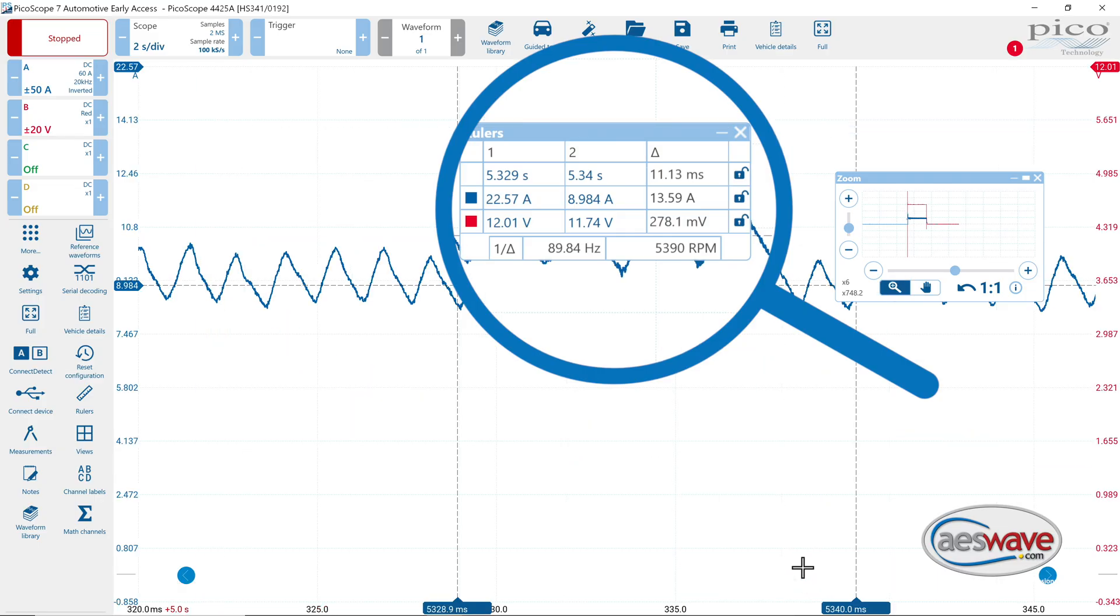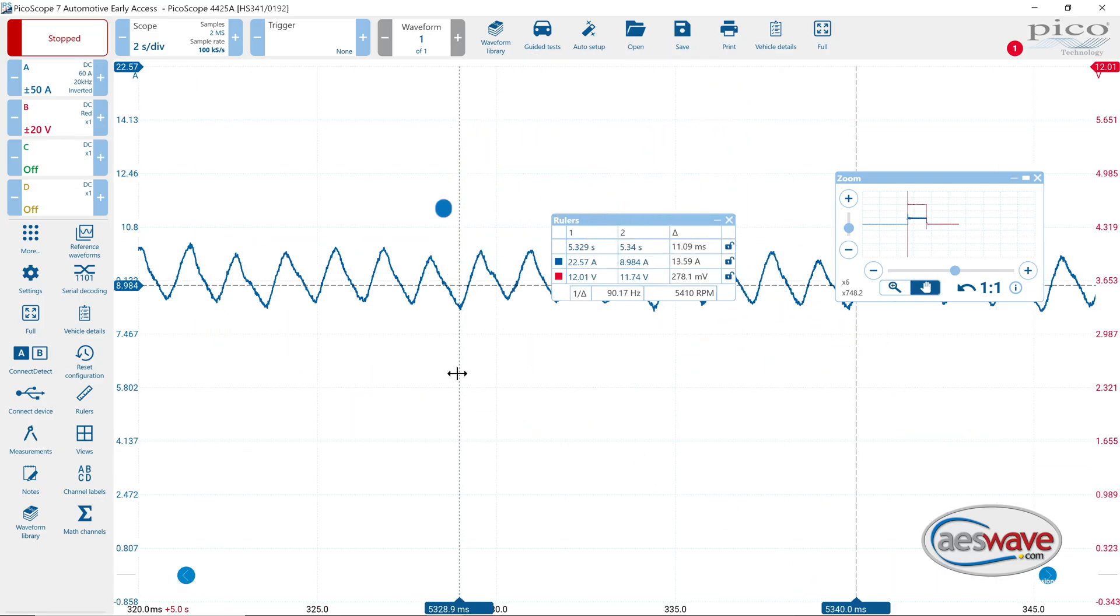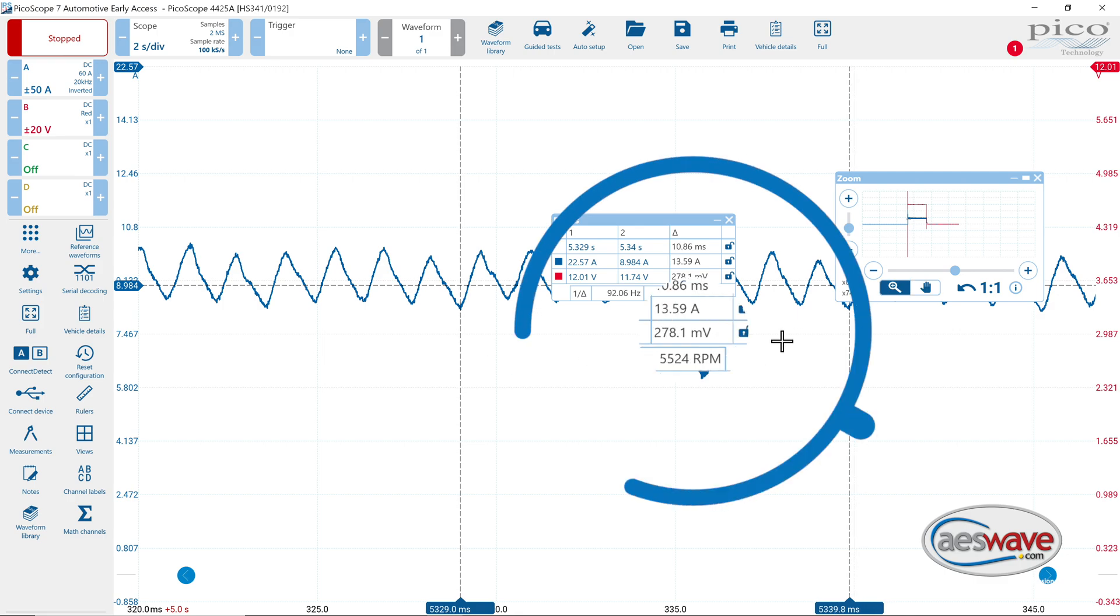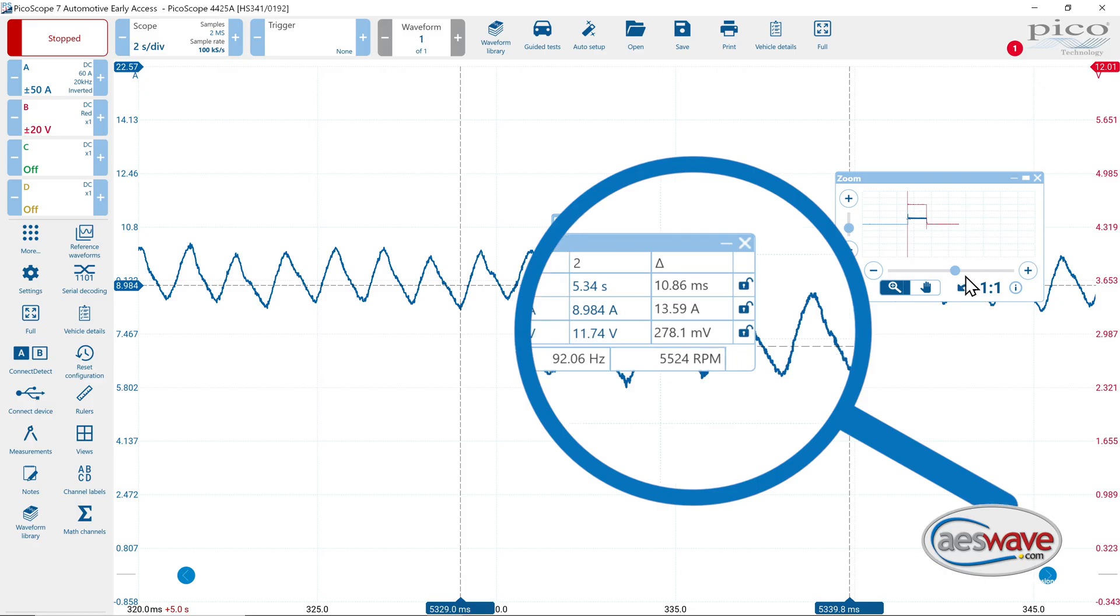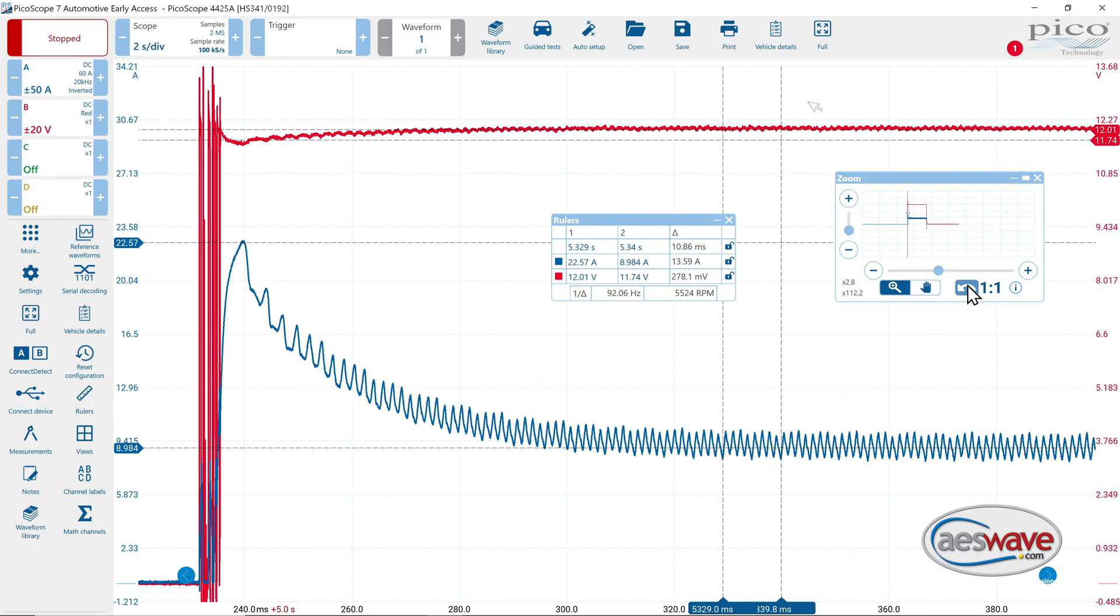If you really wanted to get specific, you could zoom right in. Get right on the bottom of that one there. Get right on the bottom of that one there. And we're at 5524. We'll zoom back out one, and there we go.